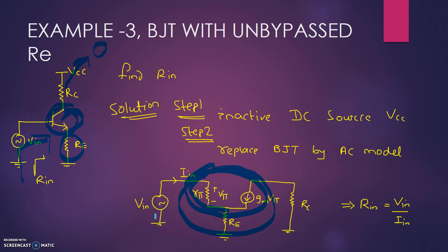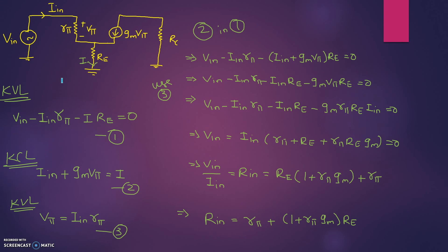The input resistance is VIN divided by IIN. We write the KVL equation: VIN minus IIN times Rpi minus I times RE equals zero. The KCL equation gives: IIN plus Gm·Vpi equals I. And there is a third equation: IIN times Rpi equals Vpi — the voltage drop across Rpi.